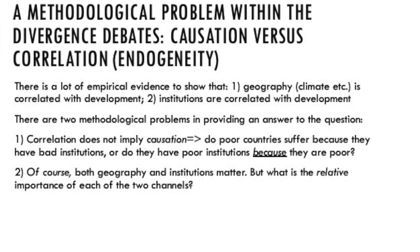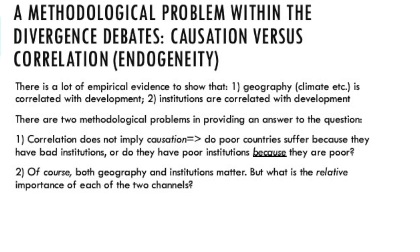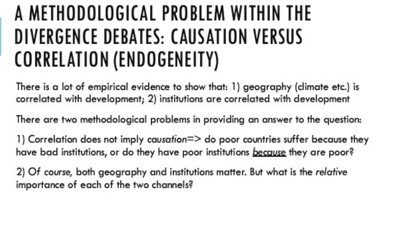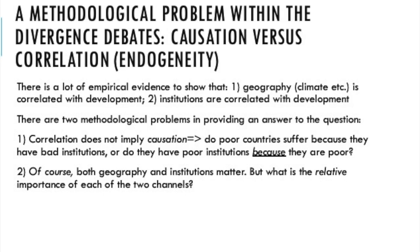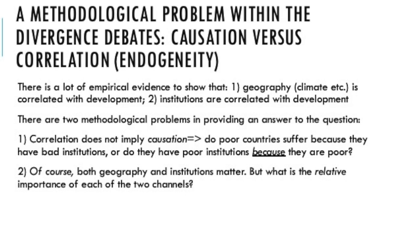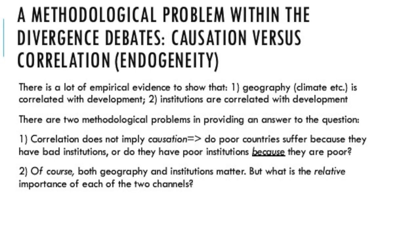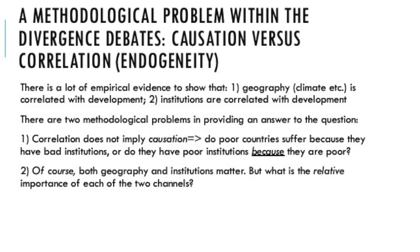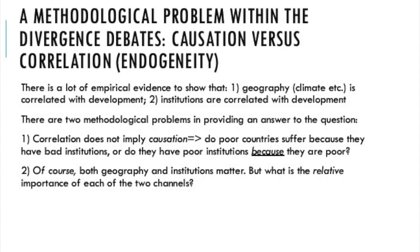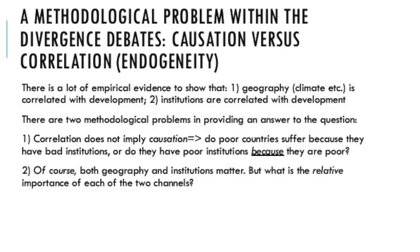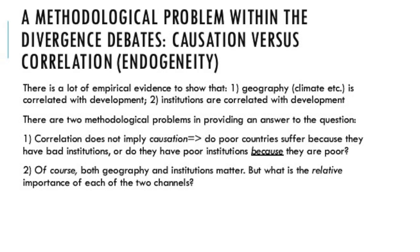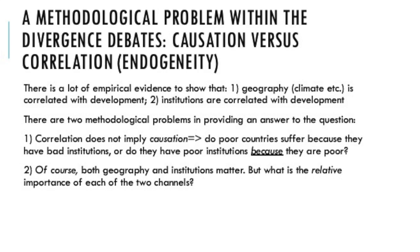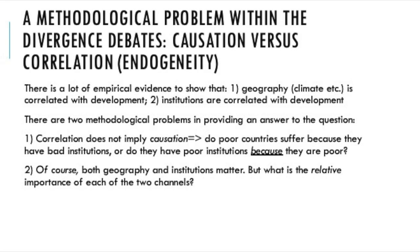Scholars such as Jared Diamond are in the former camp and argue that natural factors such as climate, disease, and endowments — things that cannot be changed per se — are responsible for long-run divergence in economic outcomes. But as economists, we are interested in quantifying the problem, to understand how, for example, a given climate or soil quality, or an institution such as democracy, affects long-run economic development.